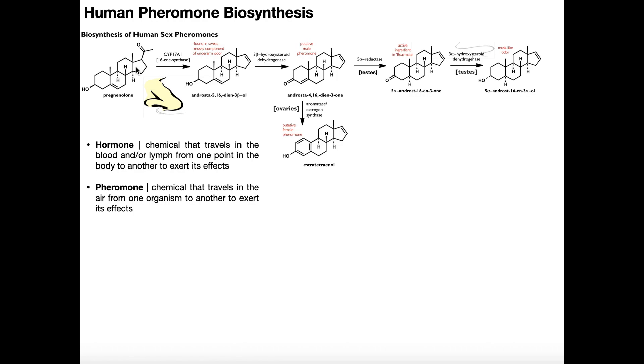For females, they're going to take pregnenolone, convert it all the way to androstadienone, and then they're going to convert it to this compound called estratetraenol. And this is done through the enzyme aromatase, which again, we saw in steroidogenesis, also called estrogen synthase. This occurs in the ovaries. And so really all this does is it takes this A-ring of the steroid, and it just aromatizes it into a benzene ring with a hydroxyl group. And so this compound would be estratetraenol.